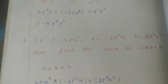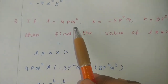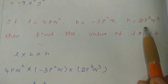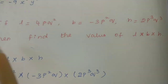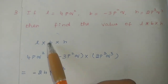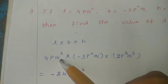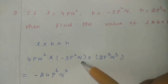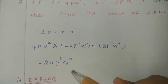Clear? Now the third problem. If l equals 4p square, b equals minus 3p square q, and h equals 2p cube q cube, find the value of l into b into h. We substitute: l is 4p square, into b which is minus 3p square q, into h which is 2p cube q cube.